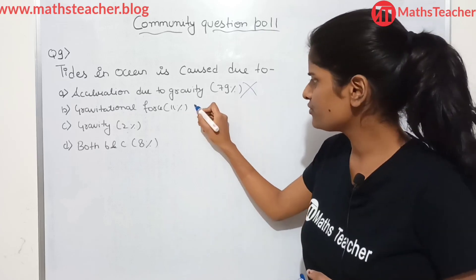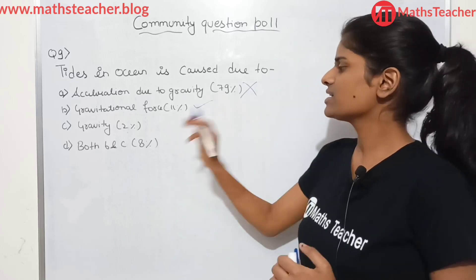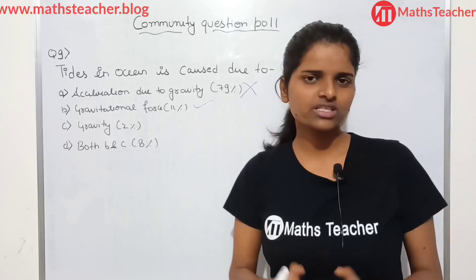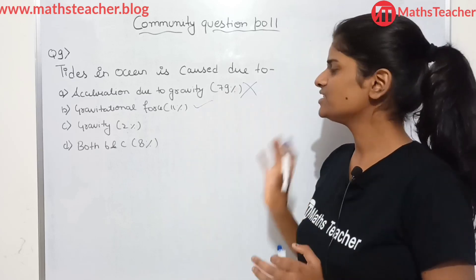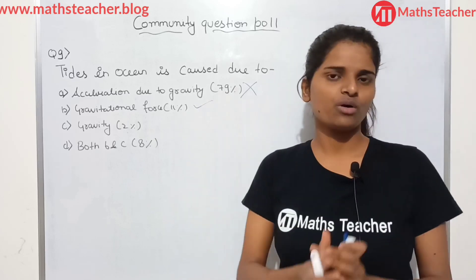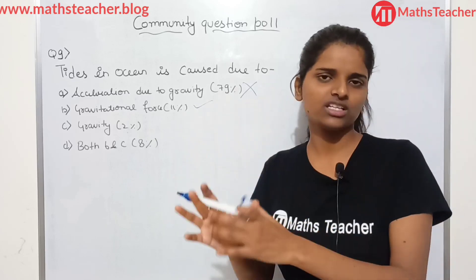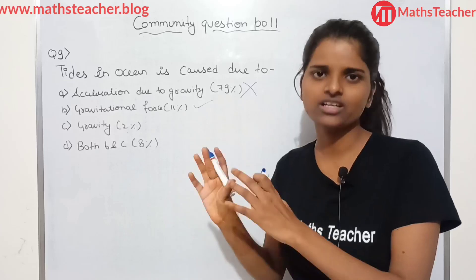Option B is gravitational force — yes, it was an application of gravitational force. Tides in the ocean are caused by gravitational force, and I said that this is important.